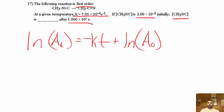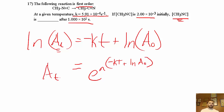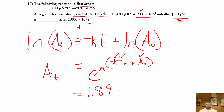We're solving for [A]t. To remove the natural log, raise both sides as an exponent of e: [A]t = e^(−Kt + ln[A]0). We know K, T, and A0, so it's just plug and chug. Plugging into the calculator gives [A]t = 1.89×10⁻³ M. Just algebra — you need to know which formula to use, rearrange first before plugging in numbers.